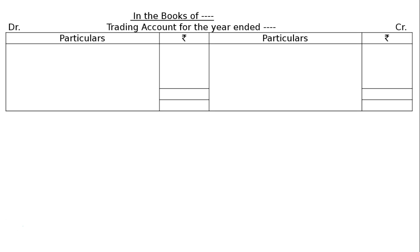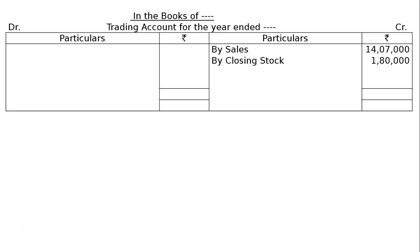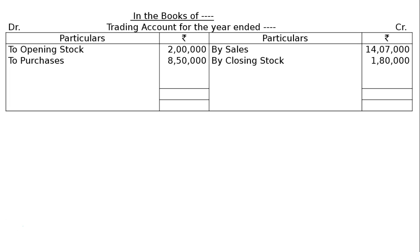Starting from the credit side: Sales rupees 14 lakh 7,000. Then closing stock rupees 1 lakh 80,000. On the debit side: opening stock rupees 2 lakh.